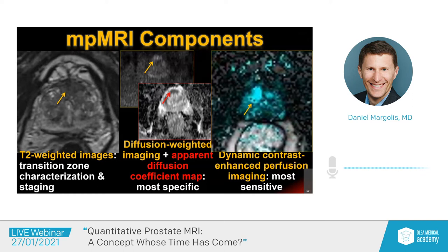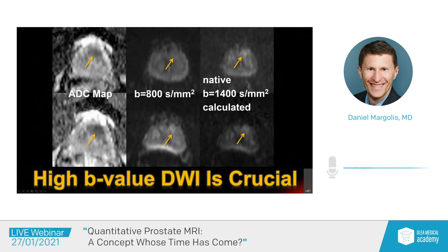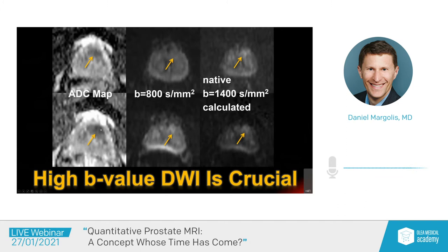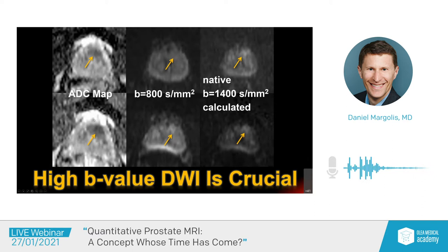The diffusion-weighted images themselves are qualitative. Here you see the same person scanned on two different scanners with a lesion in the anterior prostate that's conspicuous on the ADC map. With a B-value of 800, this is not distinct. But only with a truly high B-value image do we see that this is slightly hyperintense and, in fact, is the brightest thing on the image, which is important in terms of the PI-RADS characterization, which is qualitative.